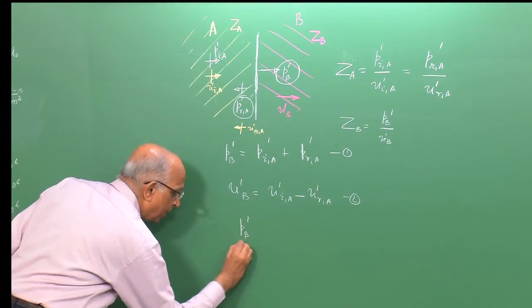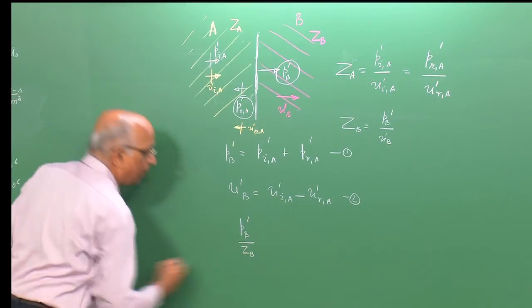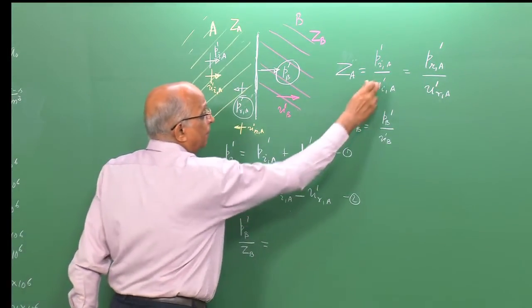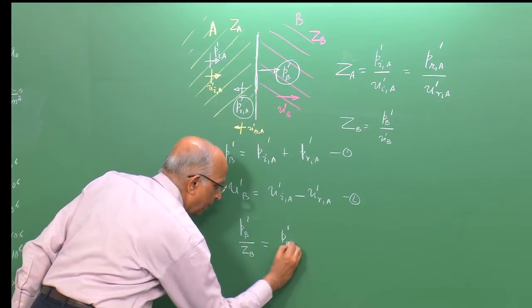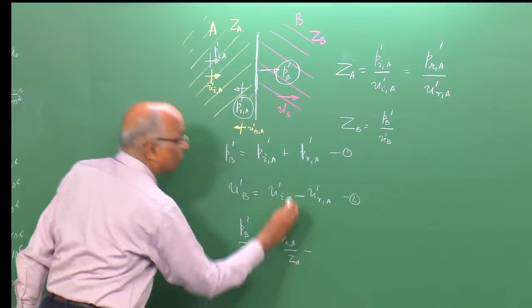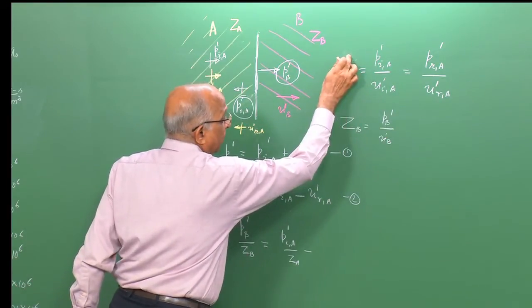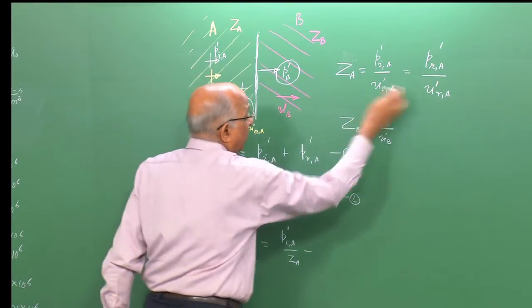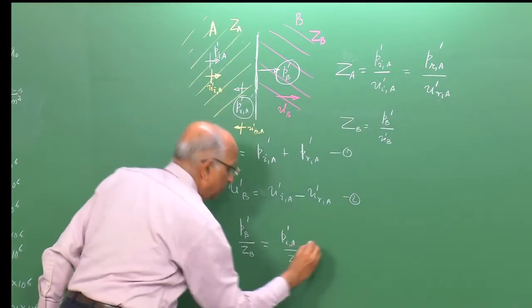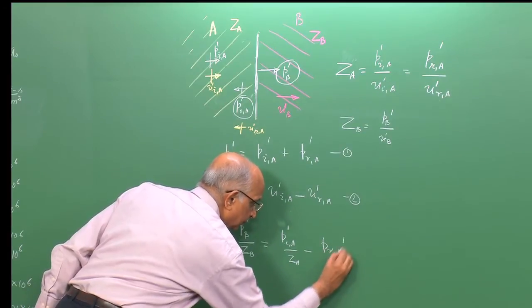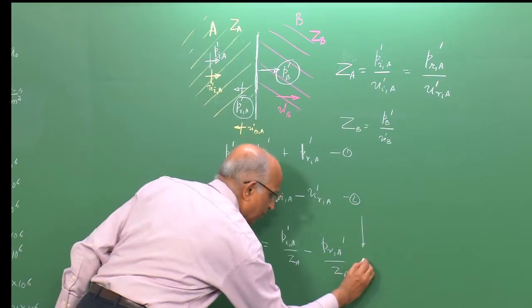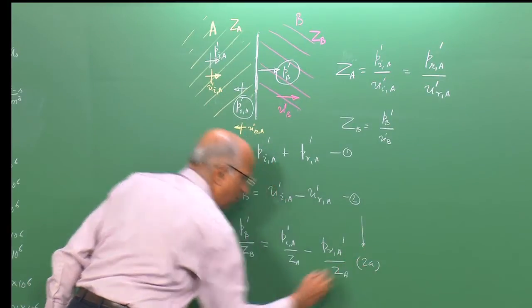Therefore equation 2 becomes: p_b prime / Z_b = p_ia prime / Z_a − p_ra prime / Z_a. This is equation 2a.